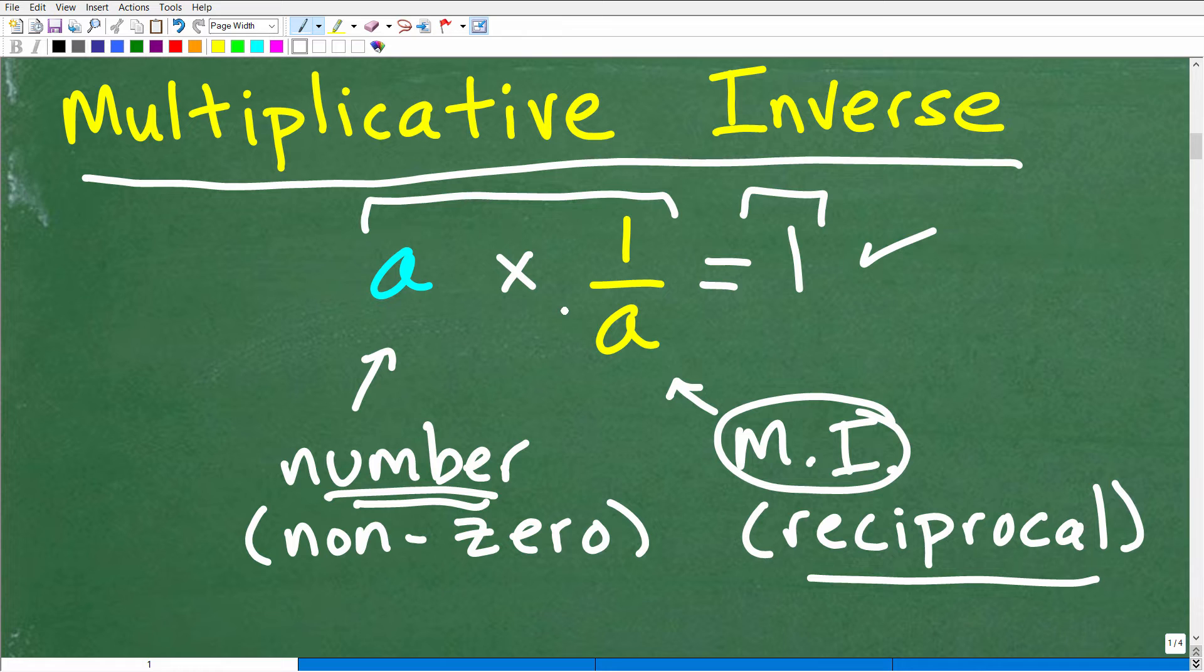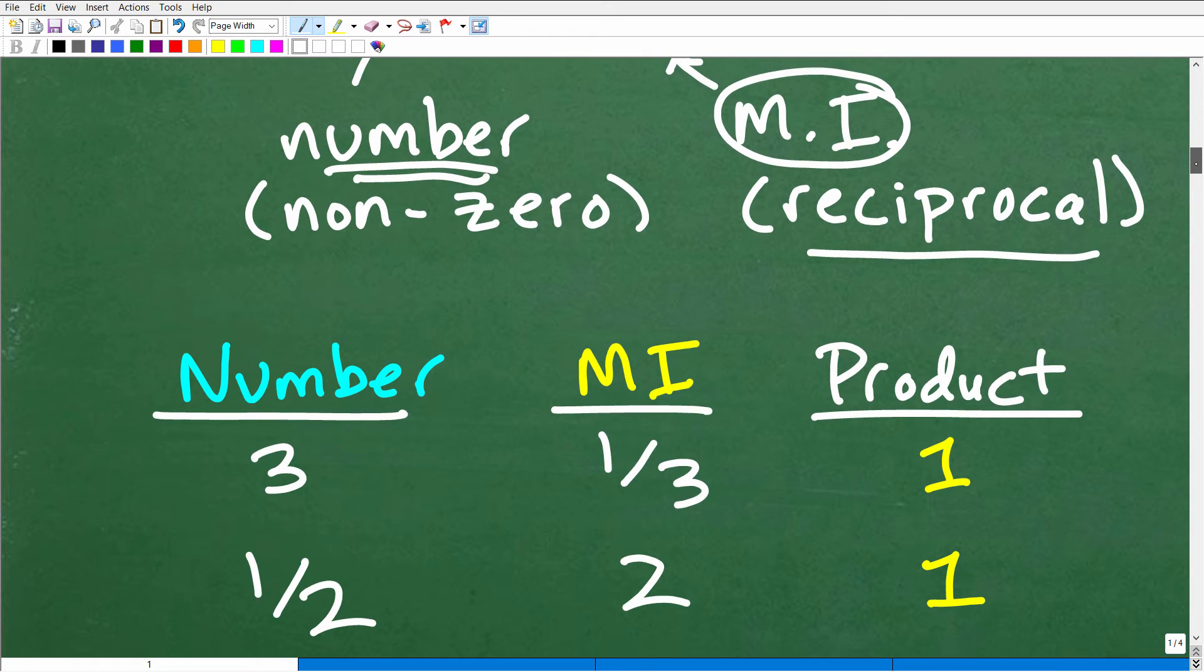So hopefully this is something you're familiar with, what you had to do to figure out this problem. But again, you want to kind of be familiar and try to remember the names of these properties. So we're talking about the multiplicative inverse. Let's take a look at some basic examples.